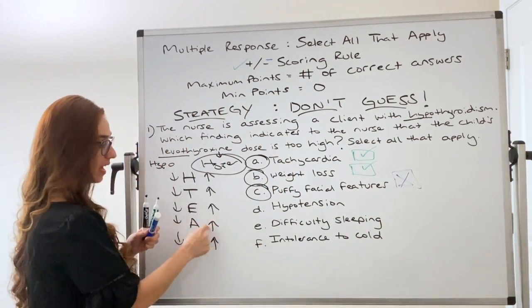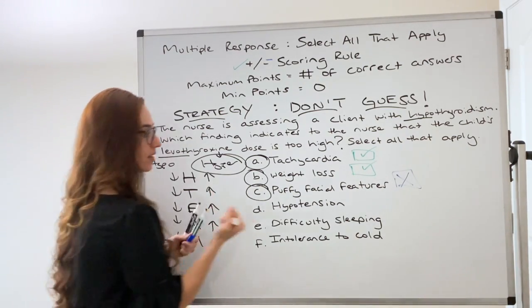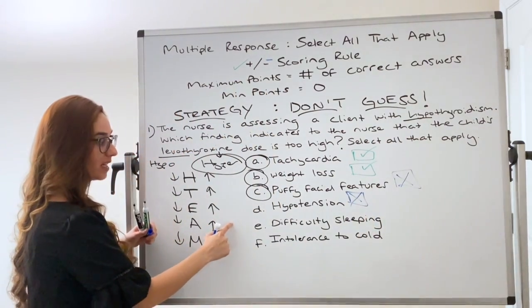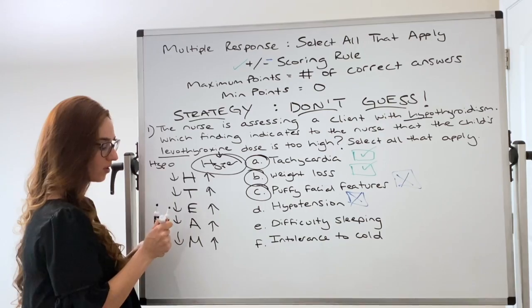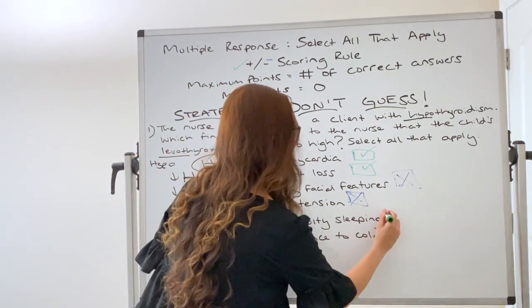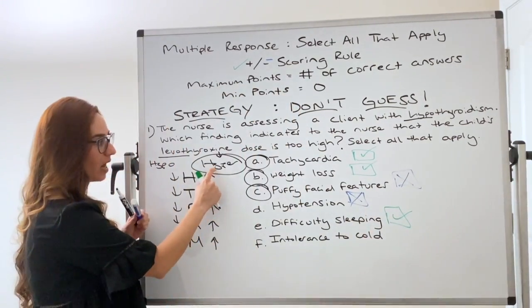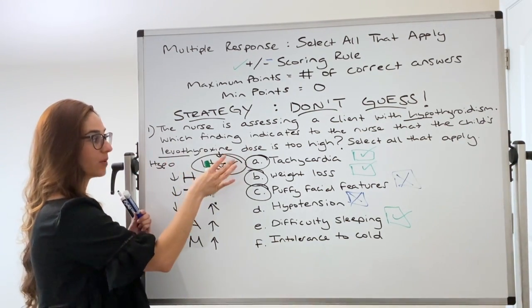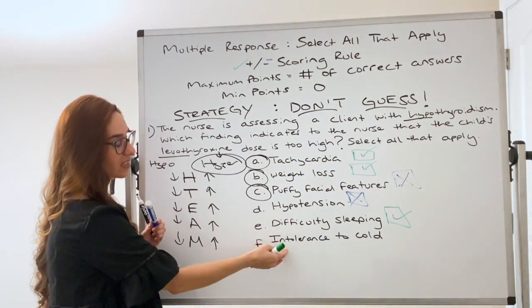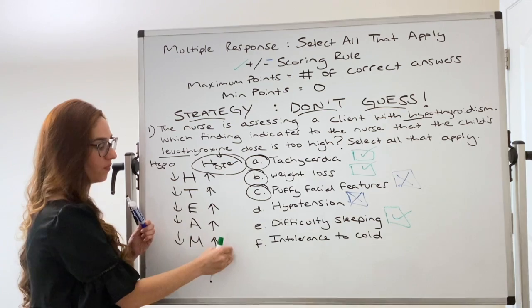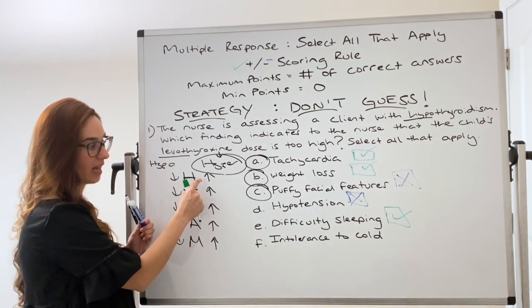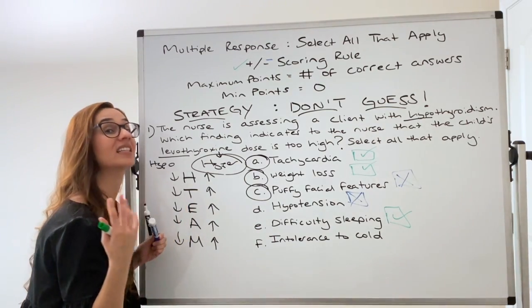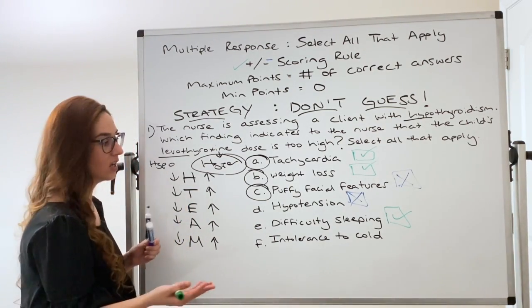Hypotension? No, everything's elevated. So that's the wrong answer. And difficulty sleeping? Yes, everything's heightened. They got way too much energy. That's the correct answer. And remember we gave too much levothyroxine. So it took them from a hypothyroid state to a hyperthyroid state. When it comes to intolerance to cold, these people are always hot. High heart rate, high temperature, they're always hot. They don't have an intolerance to cold. They have an intolerance to heat because they're always hot. So this is not the right answer.